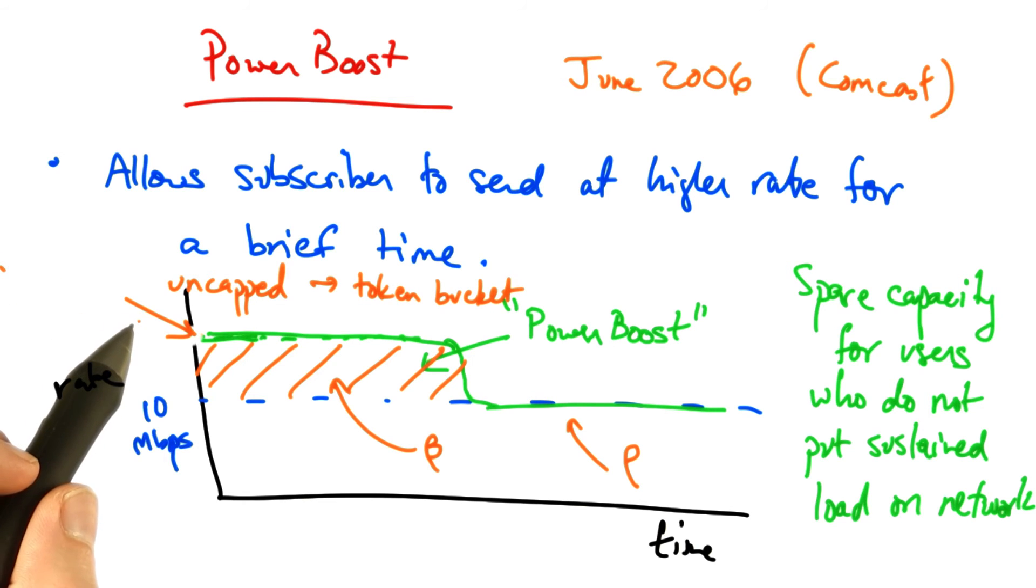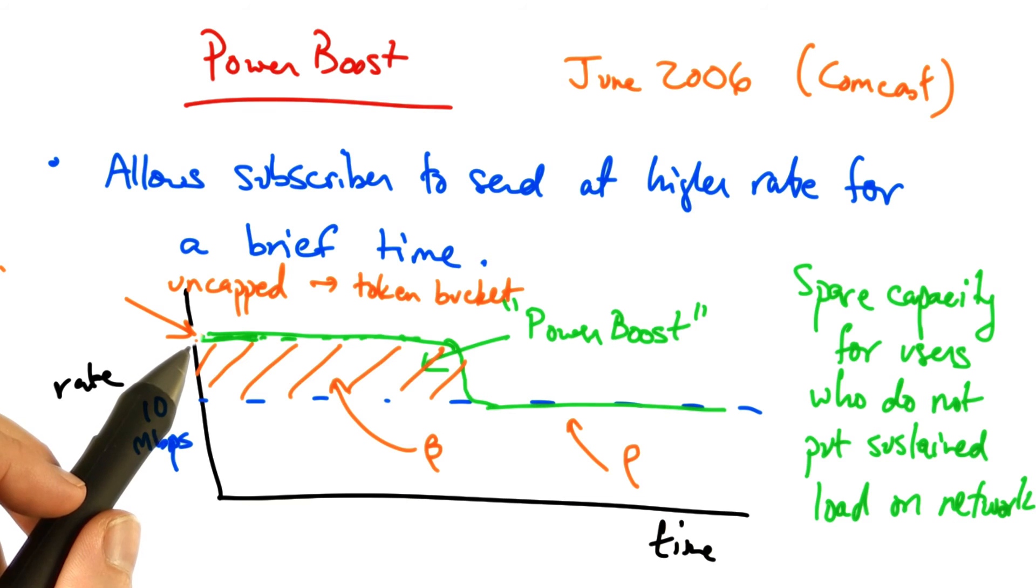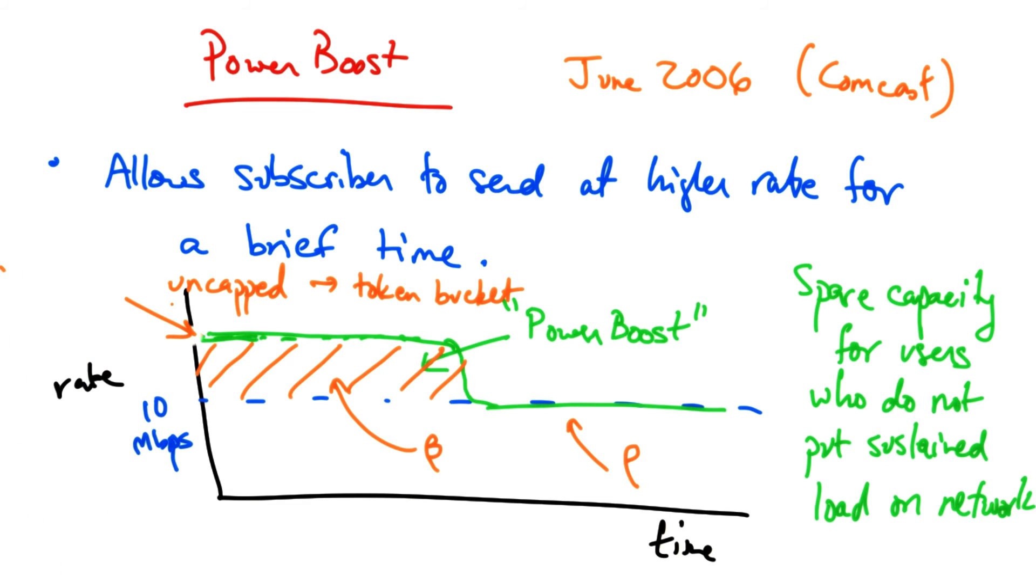Now suppose that we wanted to cap the rate that the sender could send during the PowerBoost window. Well, all we need to do in that case is to simply apply a second token bucket with another value of row.